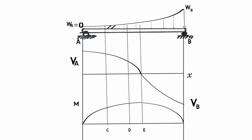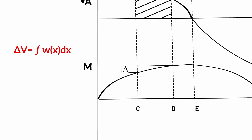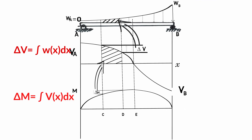In other words, the area under the distributed loading diagram is equal to the change in the shear force: ΔV = ∫w(x)dx. This means the area under the shear diagram is equal to the change in moment: ΔM = ∫V(x)dx.